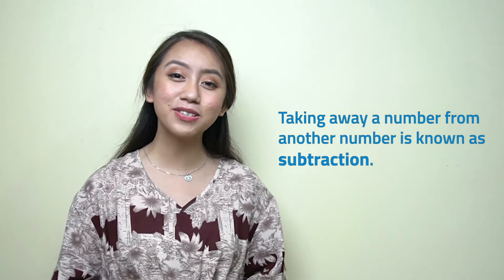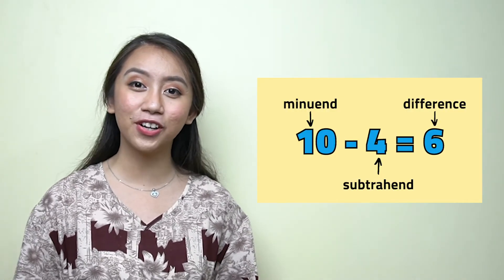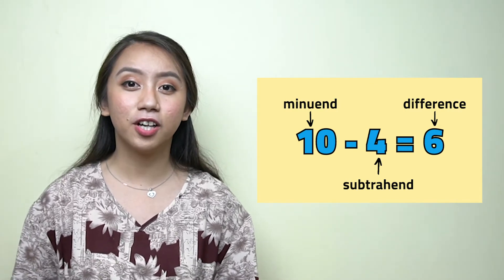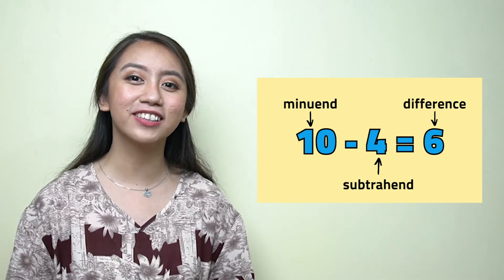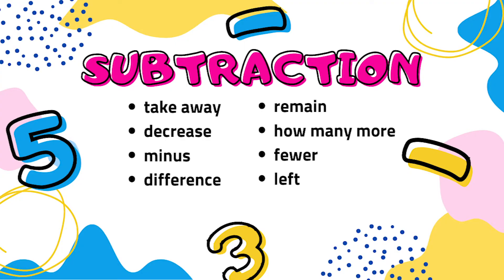Let's review subtraction. Taking away a number from another number is known as subtraction. The parts of a subtraction sentence: the number from which we subtract is called the minuend; the number which we subtract is called the subtrahend; and the answer in subtraction is called the difference. Now let's review the keywords that describe subtraction — repeat after me: take away, decrease, minus, difference, remain, how many more, fewer, left. These keywords will help you choose subtraction in solving word problems.